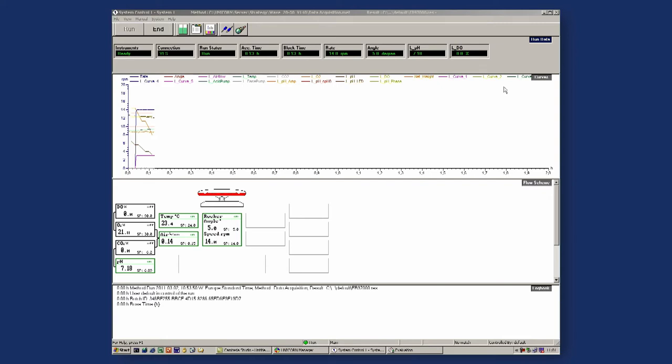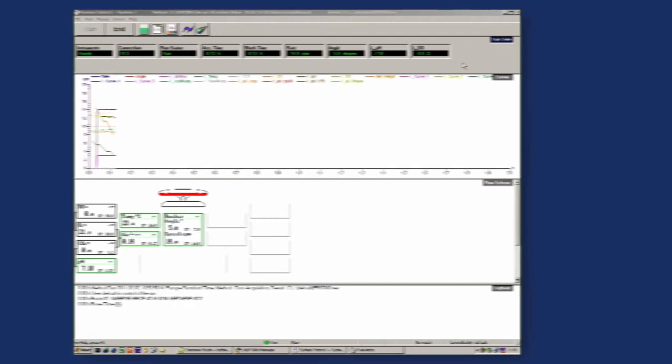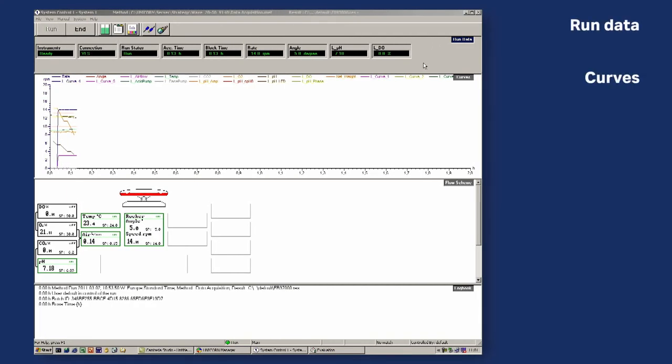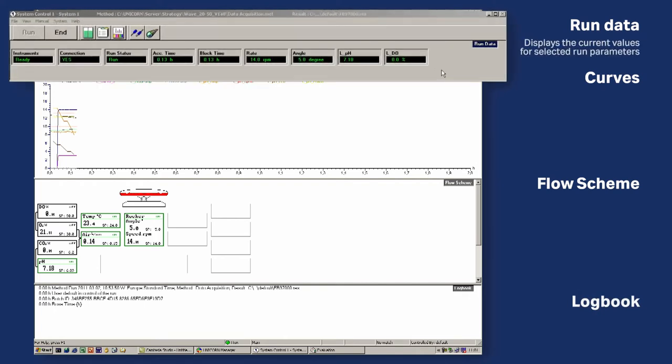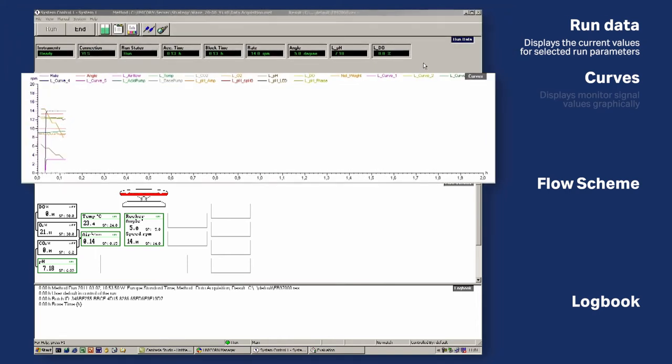The System Control module displays the status of the current system. The four panes - Run Data, Curves, Flow Scheme, and Logbook - can be viewed simultaneously. The Run Data pane displays the current values for the selected run parameters. The Curves pane displays monitor signal values graphically.